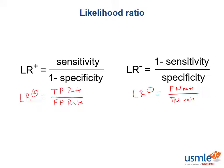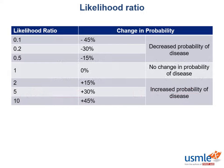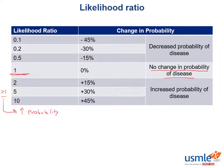If the likelihood ratio is greater than 1, this increases the likelihood that the disease in question is present. While if the likelihood ratio is less than 1, this decreases the likelihood that the disease in question is present. This can be divided out into a table. With a likelihood ratio of 1, there's no change in disease probability, but as the number increases or decreases from 1, the probability of disease changes.